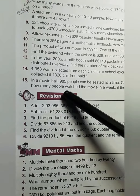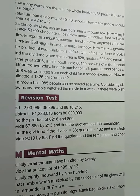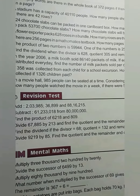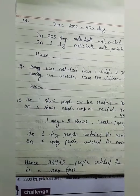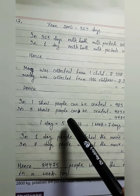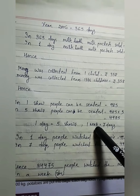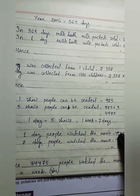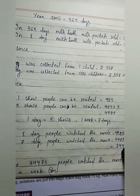15th number: In a movie hall, 985 people can be seated at a time. Considering all shows were houseful, how many people watched the movie in a week if there were five shows every day? Here, two questions are given — read properly. In one show, 985 people can be seated. In five shows, you multiply these two numbers to get people per day. Then in seven days, multiply that number by seven to get your final answer.